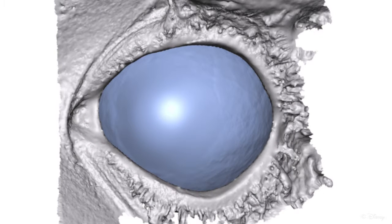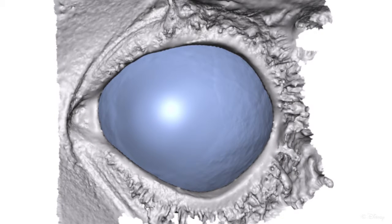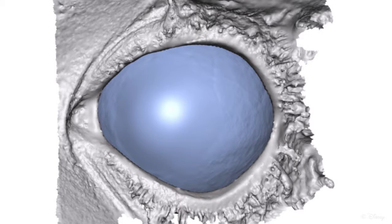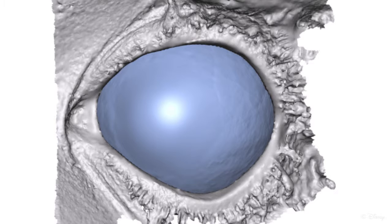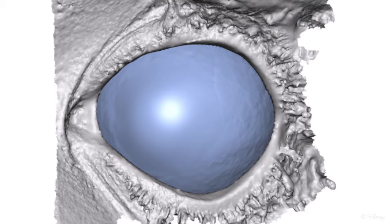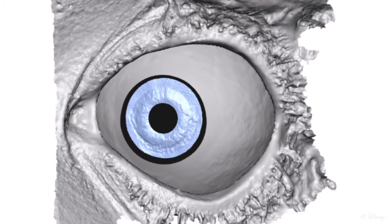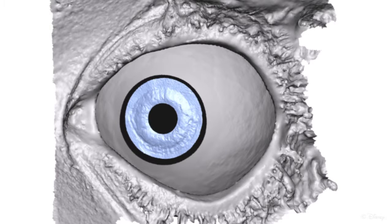The reconstructed sclera contains fine-scale surface variation unique to the captured eye. The corneal shape is reconstructed even though it's transparent, and we also measure the index of refraction of the cornea. We reconstruct the iris through the corneal refraction, obtaining fine-scale details on the iris surface.